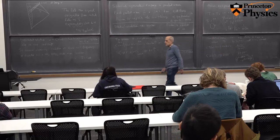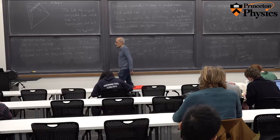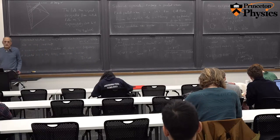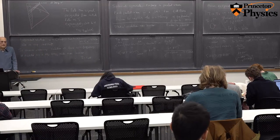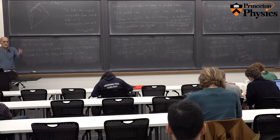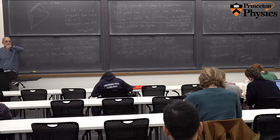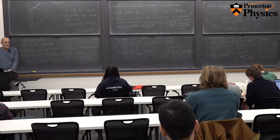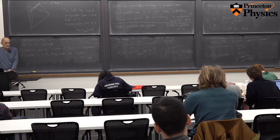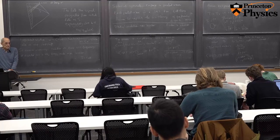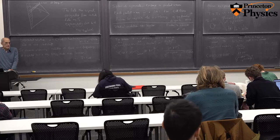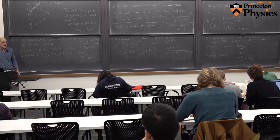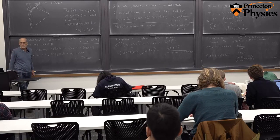For both bosons and fermions we got the correct periodicity. This is the essence of the Hawking effect, even though we'll do it more realistically in most of the rest of the lecture by making a more realistic partial wave expansion.